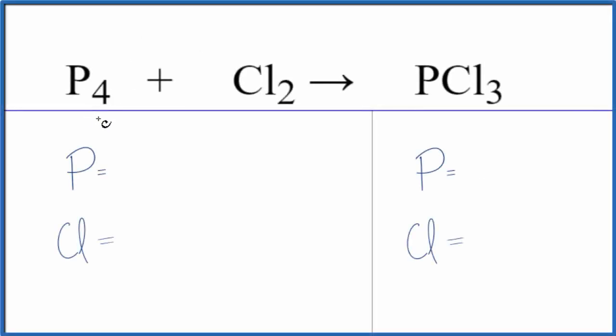In this video we'll balance the equation for P4 plus Cl2. This is tetraphosphorus plus chlorine gas. So let's count the atoms up and balance the equation.